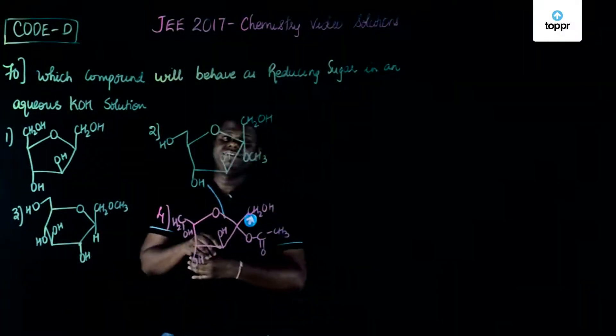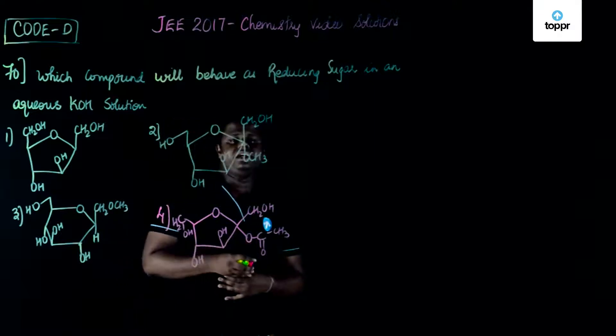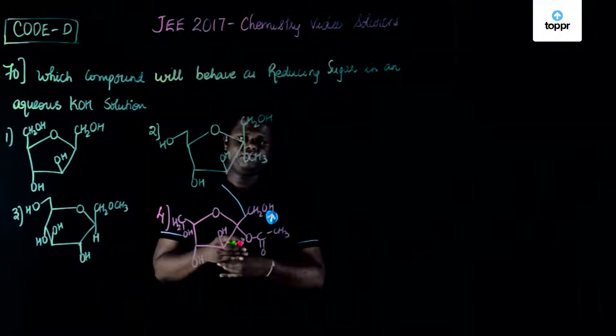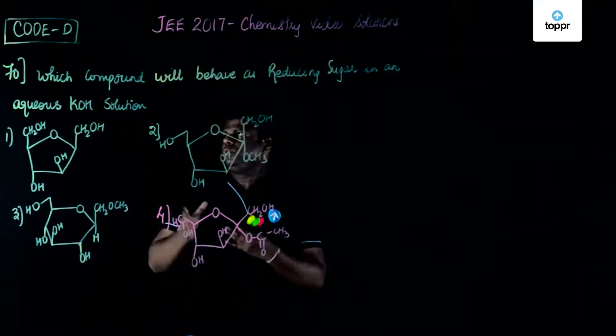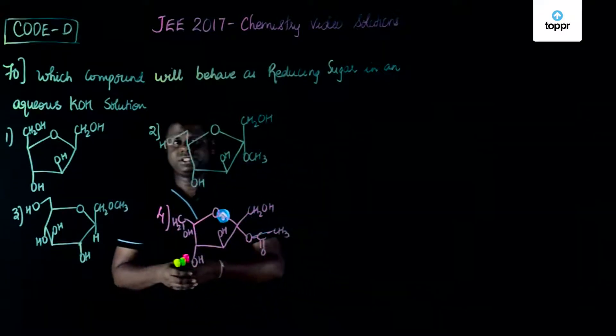Now let's move on to the 70th question. This is JEE 2017 video solutions, code D. We are going to discuss this from the section on biomolecules, specifically carbohydrates.